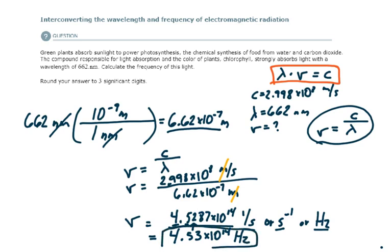The good thing about these problems that use formulas is that once you've solved for one variable, right here we solved for frequency, you can take that variable, this value, and I can plug it back in to my original formula. So this is the frequency that we found, 4.53 times 10 to the 14.